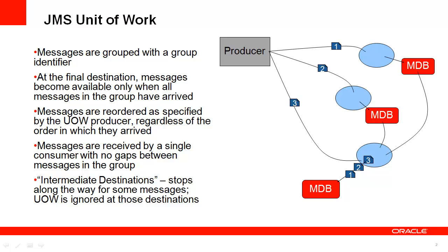In the case of a distributed destination, messages that are sent to the distributed destination members will be forwarded to the single member where the message batch will be made available for consumption. This is done without altering the message contents or its sequence in the batch. For cases where an incomplete Unit of Work has been generated, you can configure an error destination where messages will be redirected after a timeout period. This allows you to not lose messages and keep track of Units of Work that are not formed properly.